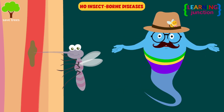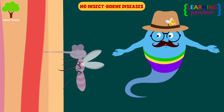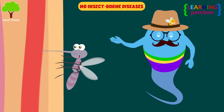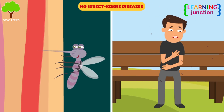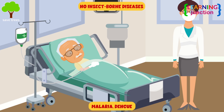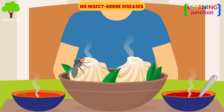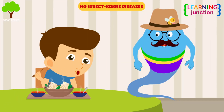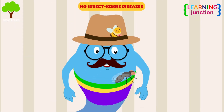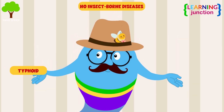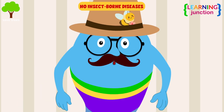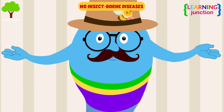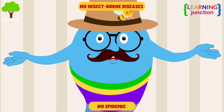No insect-borne diseases. Insects carry the pathogens and transfer them to the human body. For instance, mosquitoes are responsible for the spread of malaria, dengue, etc. There's a housefly on your food — that's not safe to eat! Houseflies are responsible for spreading typhoid, cholera, dysentery, anthrax, etc. If there are no insects, such diseases will not spread and result in an epidemic.